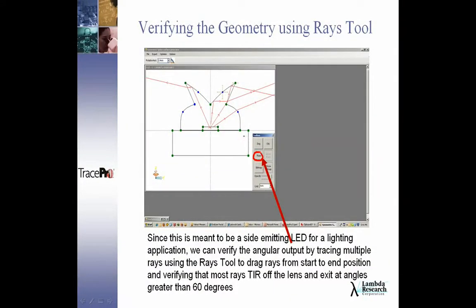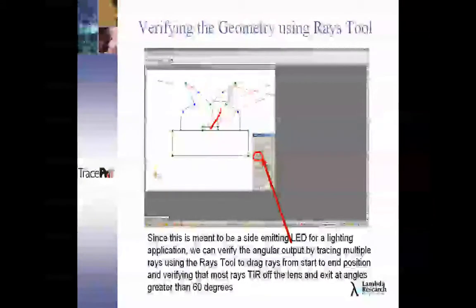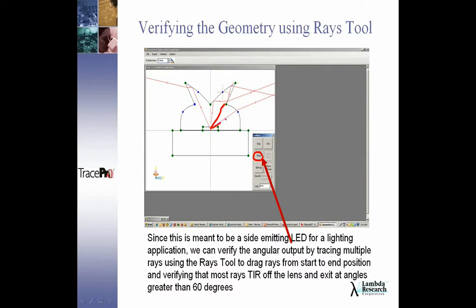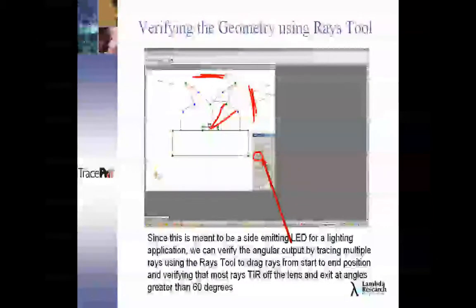Well, the rays button over here helps me because I can then ray trace. I can start a ray off and say what's going to happen if I hit this particular surface, and verify that none of the light's going out here, but it's all going off here at the sides. This allows me to make sure that I have a good starting point for my optimization.